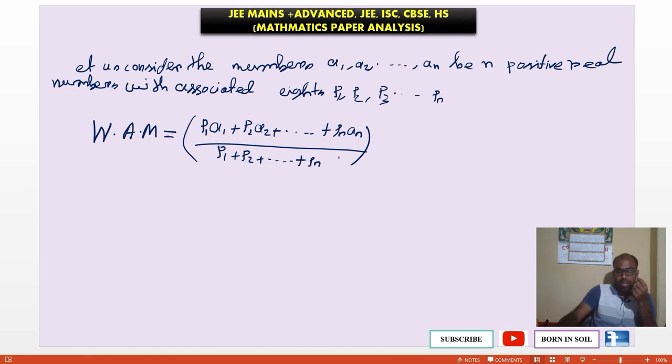Similarly we can define weighted GM in short form: a1 to the power p1, a2 to the power p2 into a3 to the power p3 root an to the power pn, whole to the power 1 by p1 plus p2 plus pn.